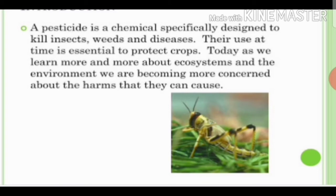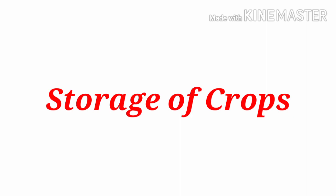The use of pesticides at the right time is essential to protect crops. As we learn more about ecosystems and the environment, we are becoming more concerned about the harms they can cause. Insects like caterpillars and grasshoppers, and microbes like bacteria and viruses, cause disease in crops — to prevent this we must use pesticides, insecticides, or fungicides.